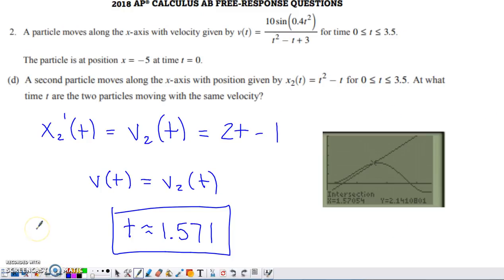Last part of this talks about a second particle. It's also moving along the x-axis. They do not give us a velocity function for this particle. They give us a position function. So the position of the second particle is given by x sub 2 of t, also holds on the interval from 0 to 3.5. When are the two particles moving with the same velocity? So we have to recognize that to determine a velocity function for this second particle, we need to take the derivative of that.